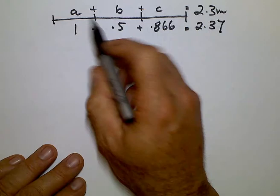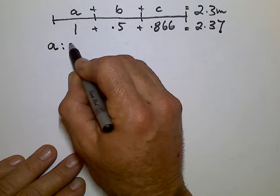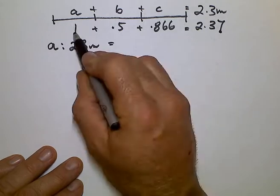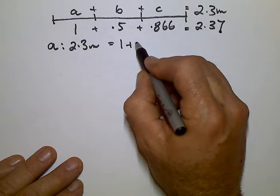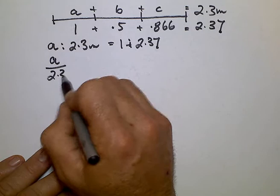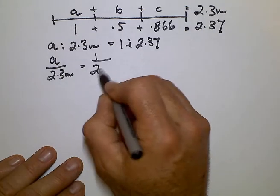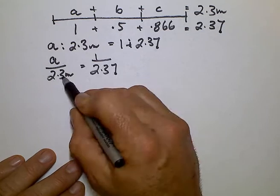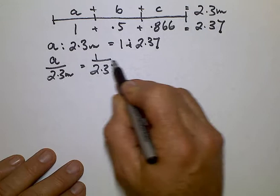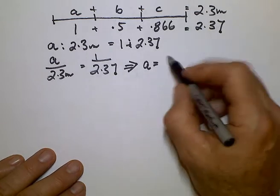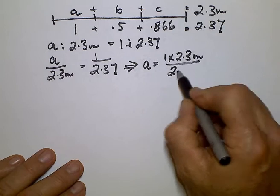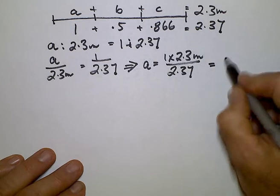The proportion of A to the total length is written A colon 2.3 metres. So that's the ratio of A to 2.3 metres, which is equal to 1 to the total of the ratios. Another way of writing that is A divided by 2.3 metres equals 1 divided by 2.37. We transpose 2.3 metres, take it across to the other side of the equation. Because it's divided on this side, it becomes multiply on that side. So therefore A equals 1 times 2.3 metres divided by 2.37, and that calculates to the length of A is 0.97 metres.